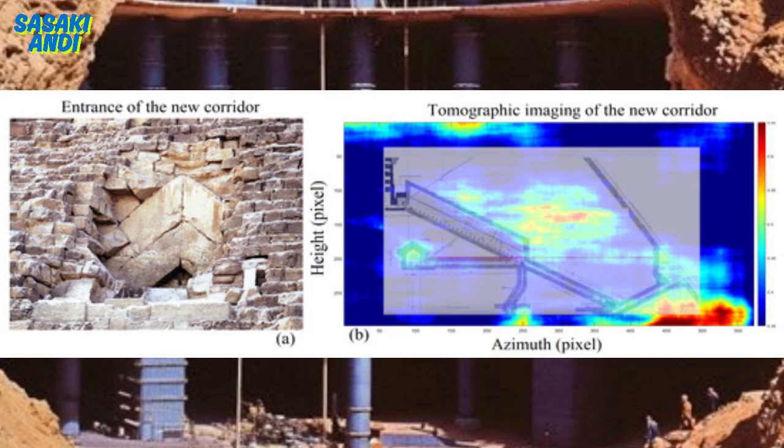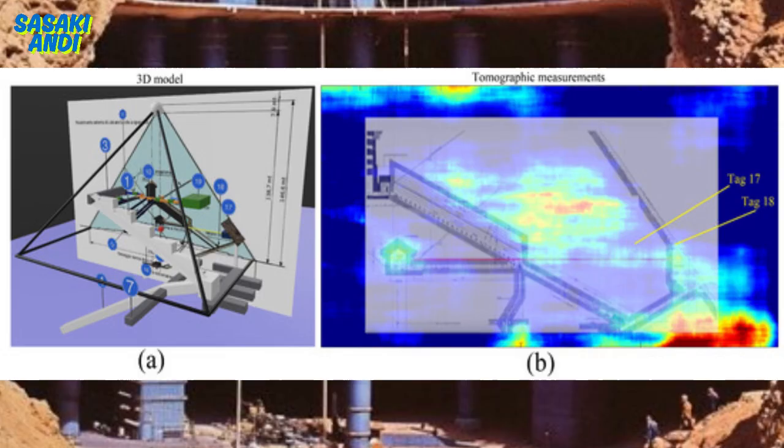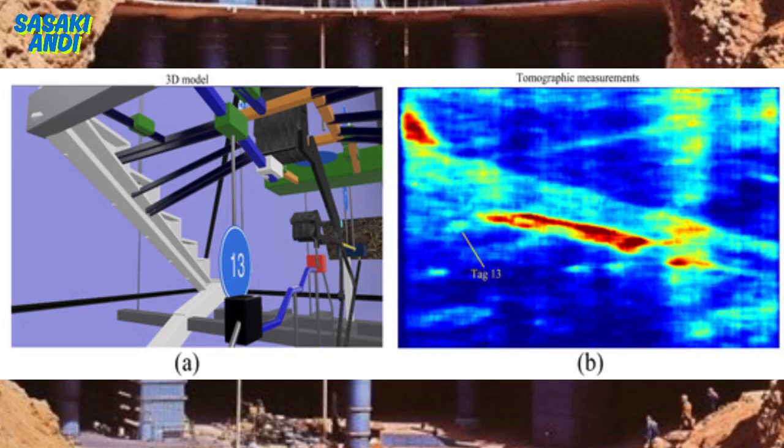So we're seeing more and more evidence that the pyramid's interior is far more interconnected than we initially thought. It's really mind-blowing to think about all of this hidden infrastructure. Now besides the ramps and corridors, the studies also mentioned some voids, including a little void and a big void. What's the story with those? Well, the little void, tag 17, is located just behind the original entrance to the pyramid. And extending from this void is a corridor, tag 18, that goes towards the Grand Gallery but doesn't seem to connect to it directly.